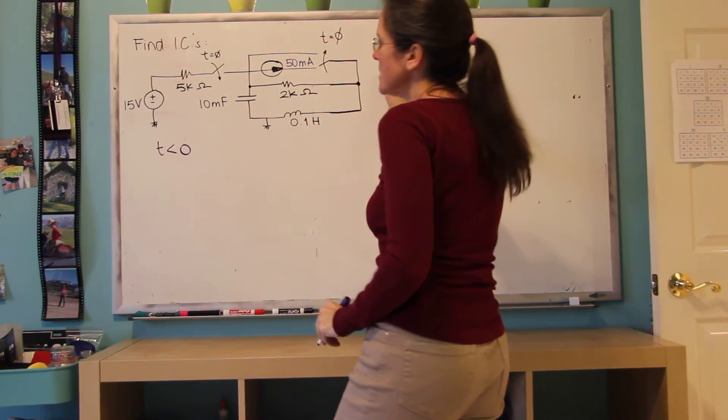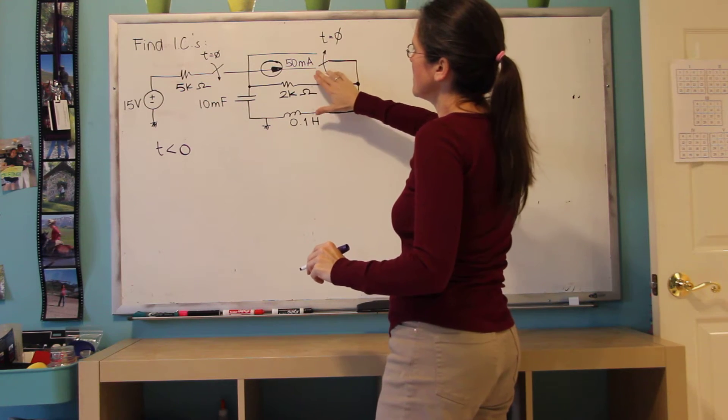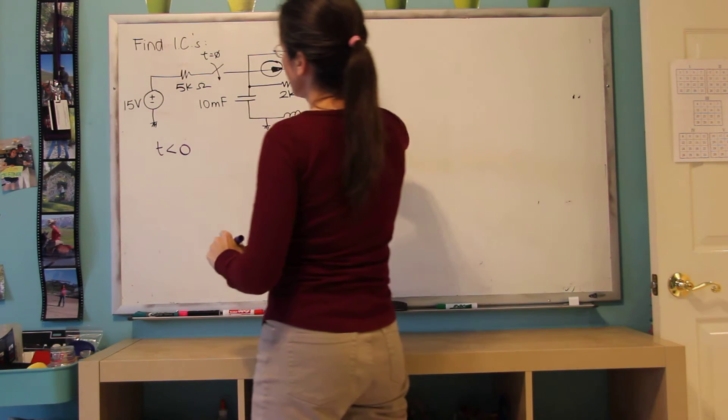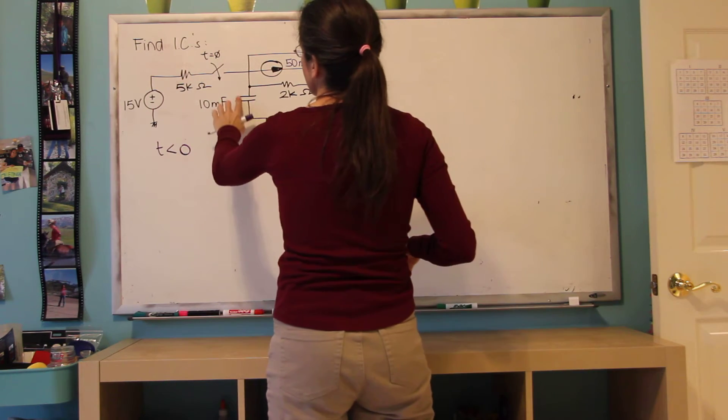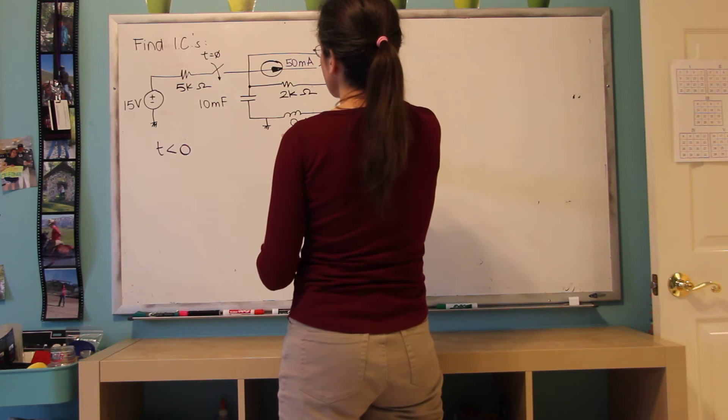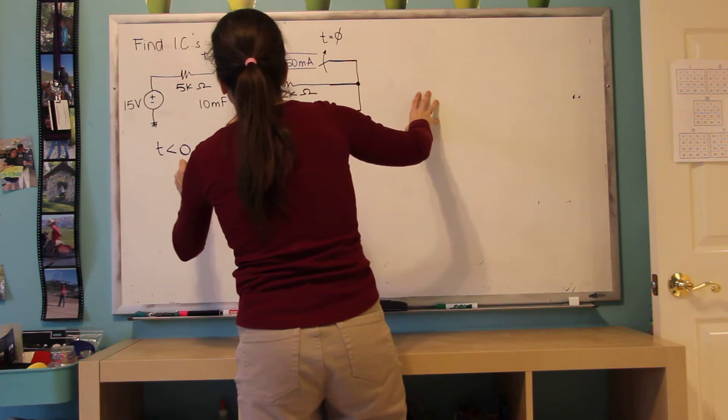So I'm going to draw the circuit for T less than zero. This switch is open, so it's out. And here the switch is on the 50 milliamps. So this part of the circuit is not included in my first analysis. I'm only interested in this voltage across the capacitor and the current through the inductor.